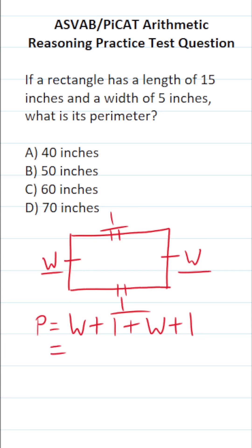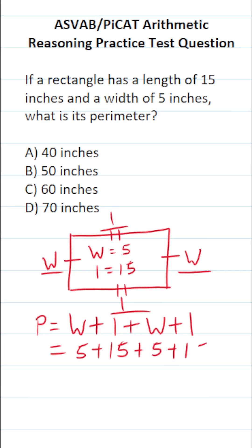We know these values. We know this rectangle has a width of 5 and a length of 15, according to the problem. So let's just plug those values in and solve accordingly. This becomes 5 plus 15 plus 5 plus 15. You should be able to do this part mentally: 15 and 15 is 30, 5 and 5 is 10, and 30 and 10 is going to be 40.